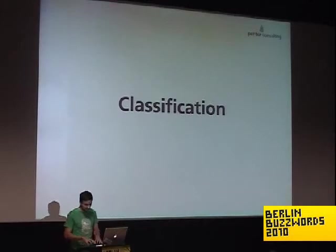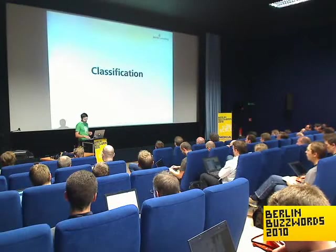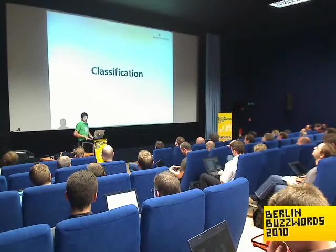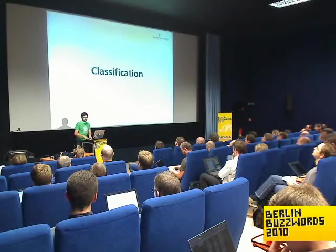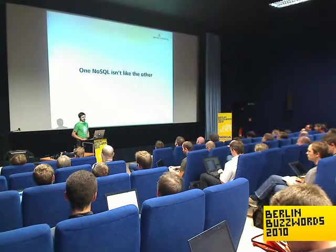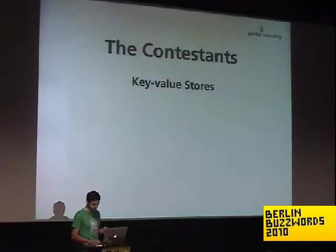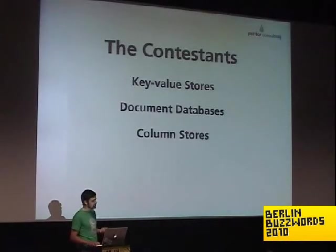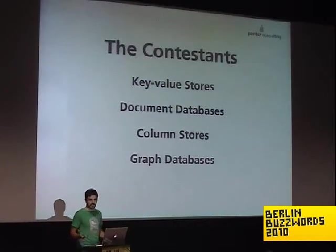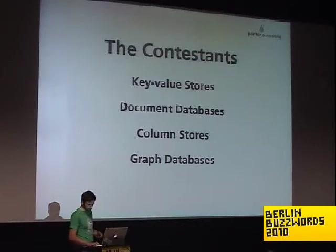The classification: there are a couple of tools and categories that have emerged, and people love putting tools into different categories. I'm going to do a simple classification, because one NoSQL database isn't like another — they're all somewhat different but also strangely similar. We have four contestants: key-value stores, document databases, column stores, and graph databases. Except for key-value stores, I think all of these are somewhat represented at this conference. I'd highly suggest going to all those talks to get more detail, because I won't go into a lot of depth on them.